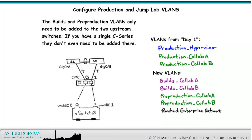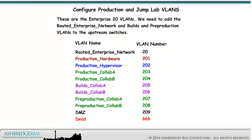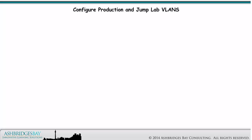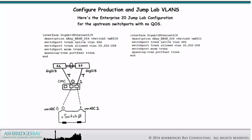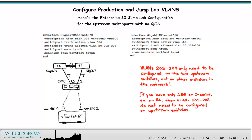The builds and pre-production VLANs only need to be added to the two upstream switches. If you have a single C-Series, they don't even need to be added there. These are the Enterprise 20 VLANs — not all VLANs are used for the base deployment. Here's the Enterprise 20 Jump Lab configuration for the upstream switch ports with no QoS. VLANs 205 to 208 only need to be configured on the two upstream switches, not on other switches in the network. If you have only one BE or C-Series — so no HA — then VLANs 205 to 208 do not need to be configured on the upstream switches.